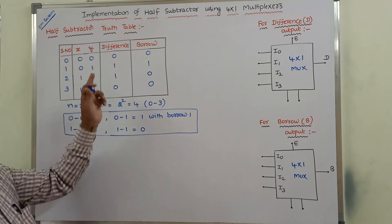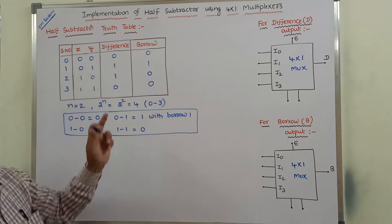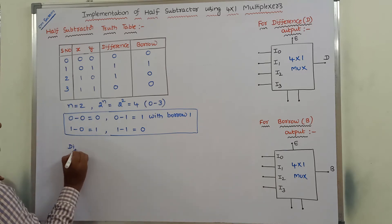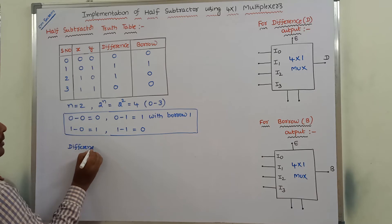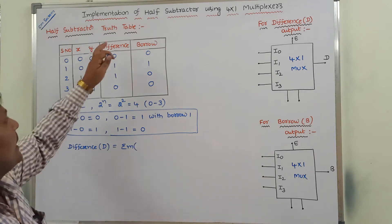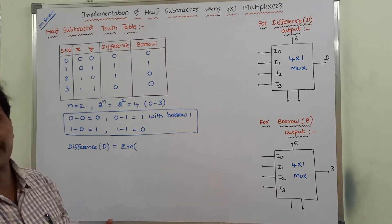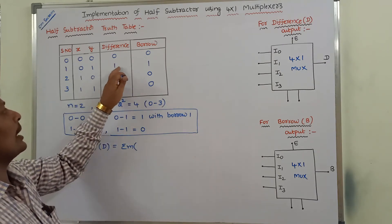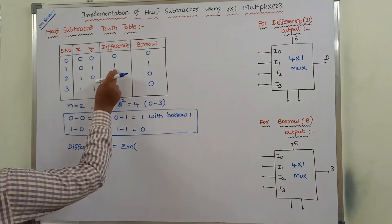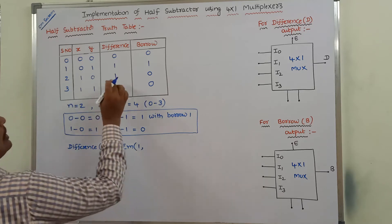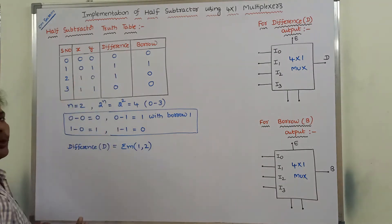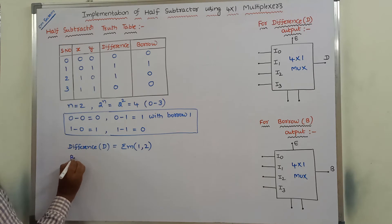Next, we have to represent the difference output and borrow output in the form of sum of minterms. Difference D is equal to sigma m of — in the difference column, wherever the ones are present, only those are considered and the corresponding minterm number we write. In the difference column, here 1 is there — the corresponding minterm number is 1. Next, here 1 is there — the corresponding minterm number is 2. Only two ones are present. In the same way, we have to find out borrow.